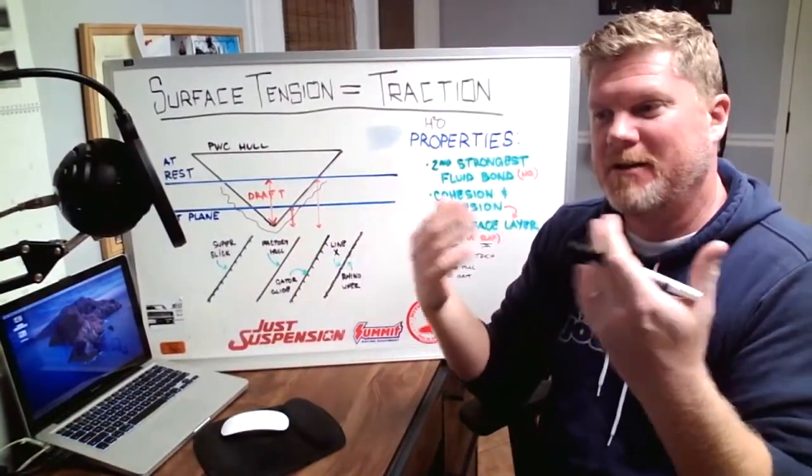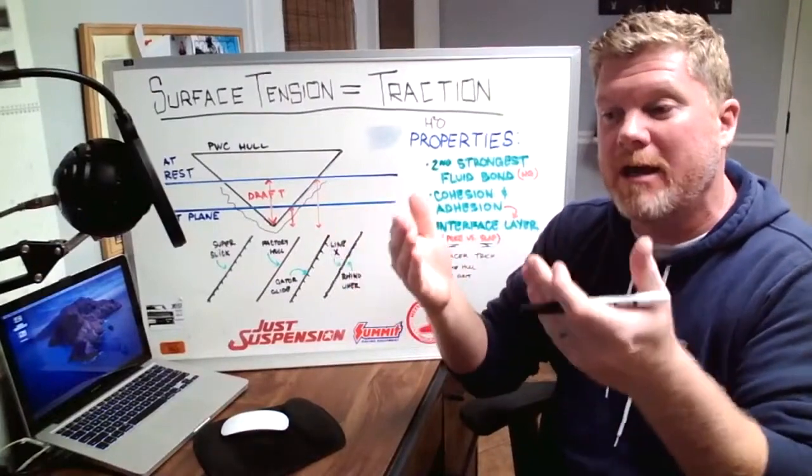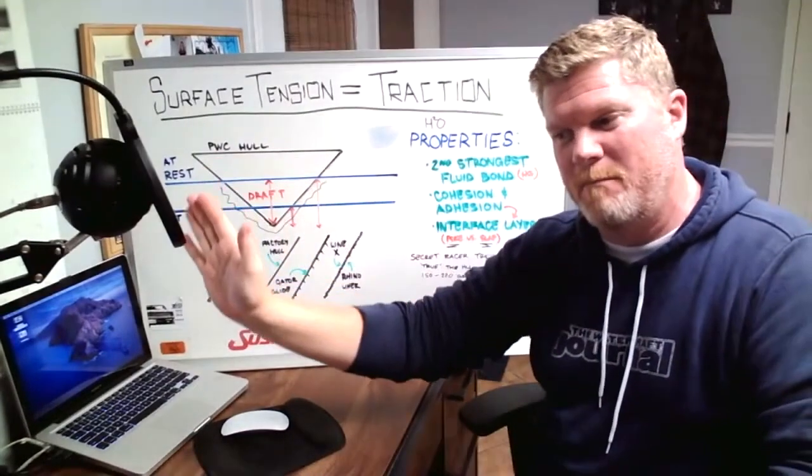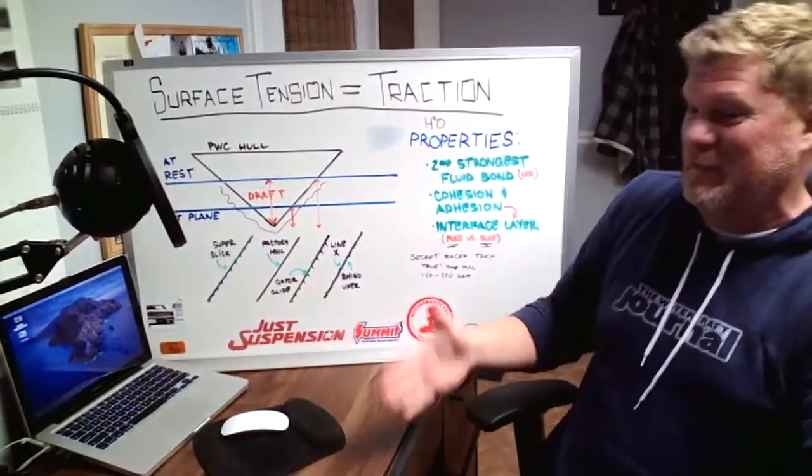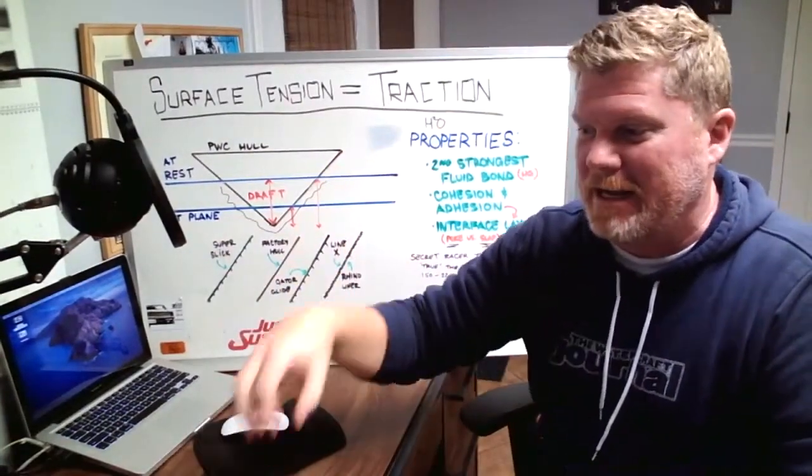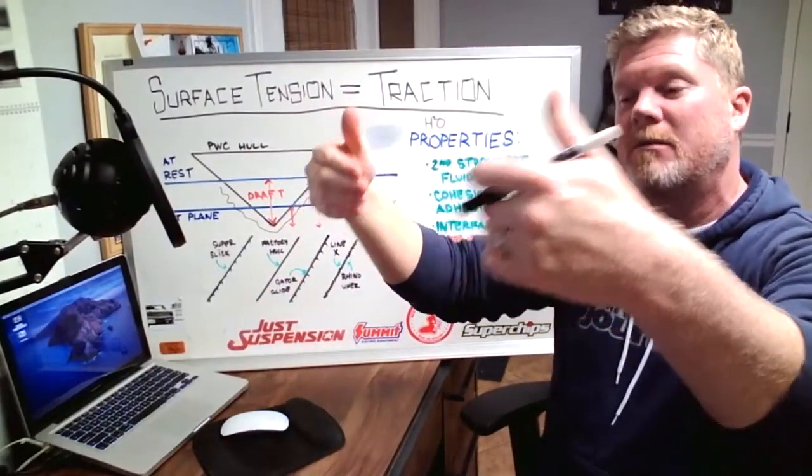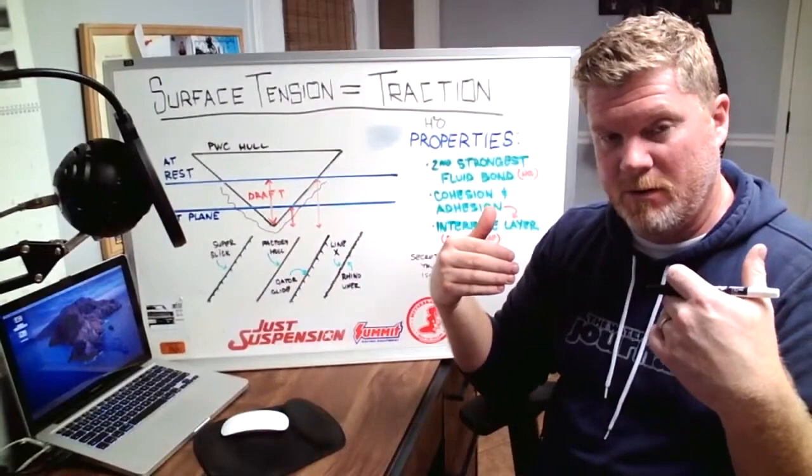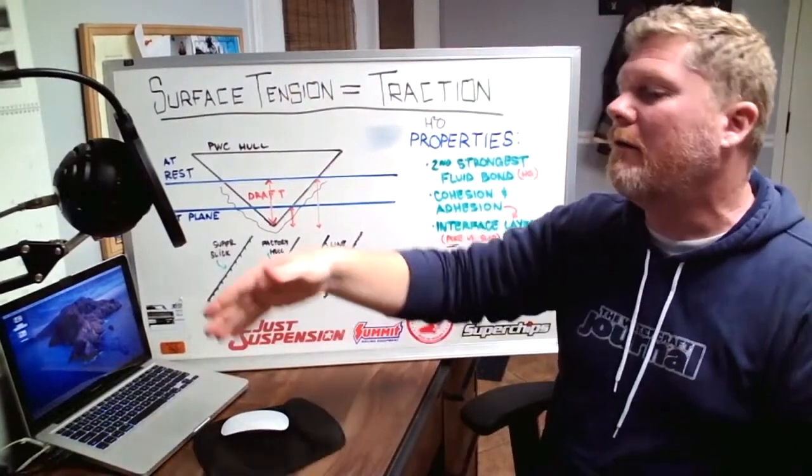They changed and they gave it those shark gills. What does that shark gill do? The shark gill broke up the surface tension. It literally broke it up so that it wasn't one big flat surface, like taking your hand across the carpet and burning your hand.